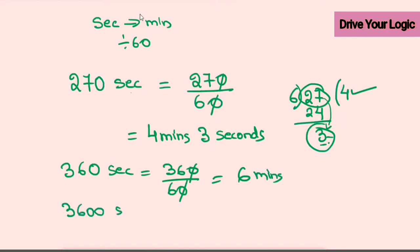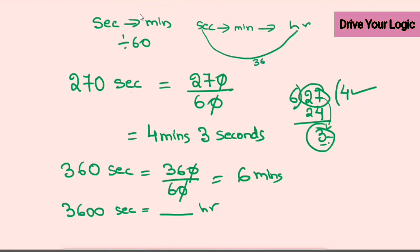Now take 3,600 seconds and convert to hours. You're going two steps back — second to minute to hour — so divide by 3600. 3600 ÷ 3600 = 1 hour. Easy one!